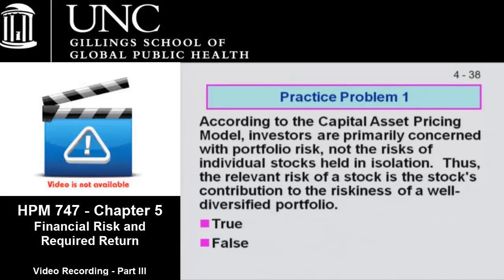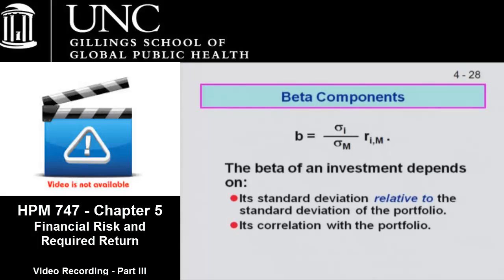Before I go through the practice problems, any questions about the basic concepts? Back on slide 28 — you have a formula. What is the R_iM? It's the correlation coefficient. Is that just usually given, or do you calculate it? You calculate it. In the real world, market betas are calculated by companies that analyze historic returns in different corporations — these are statistical calculations. You can calculate the correlation coefficient in Excel. You plot two rows and two columns of numbers and use the correlation coefficient function in Excel to calculate it.